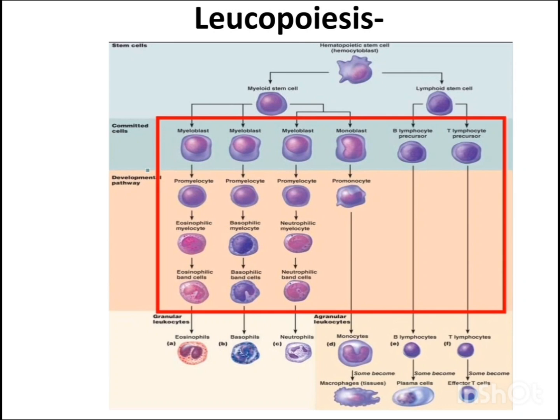The lymphoid stem cell gives rise to B lymphocyte precursors and T lymphocyte precursors. B lymphocyte precursors lead to B lymphocytes, which ultimately form plasma cells. T lymphocyte precursors lead to T lymphocytes, which ultimately form effector T cells.